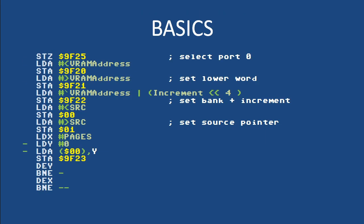The basics — how do you use the port. First you have to select the actual port you want; you should always make sure you are currently on the port you expect to be, as that can be a fun bug to track down. You set the address and the increment register — I've done it in low, upper word, bank order, which I don't believe is important for this particular machine. You then need to set up a source, whether via indirect or absolute, depending on your data. This code here copies X number of pages to somewhere in VRAM.